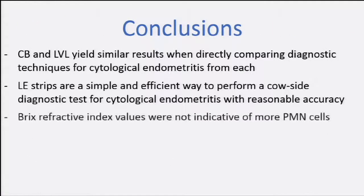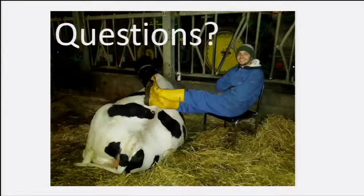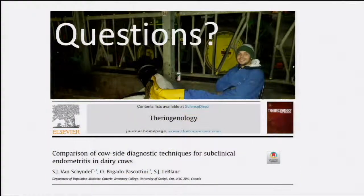In conclusion: cytobrush and lavage yield similar results when compared to each other, but the lavage produces a higher amount of polymorphonuclear cells. The leucocyte esterase strips are not a perfect technique, but a reasonable technique to diagnose endometritis with fair accuracy. The Brix refractometer is not a good method to diagnose subclinical endometritis. Most importantly, you can diagnose subclinical endometritis at the cow side and immediately treat the cow — that is the main advantage of this method. The paper was published about two weeks ago and can be read in detail.